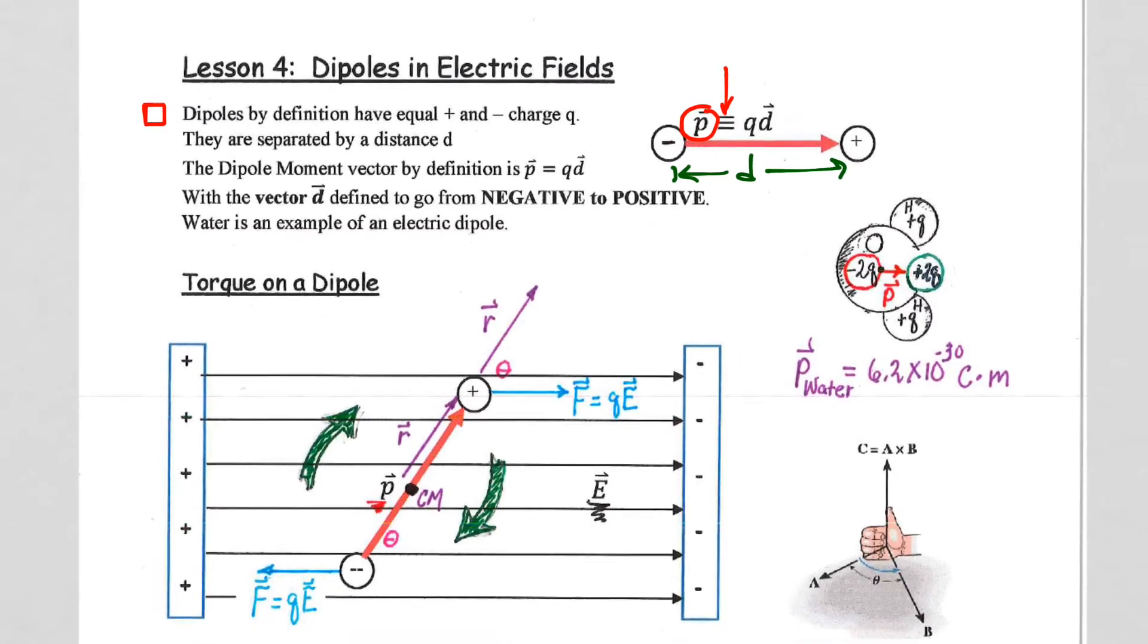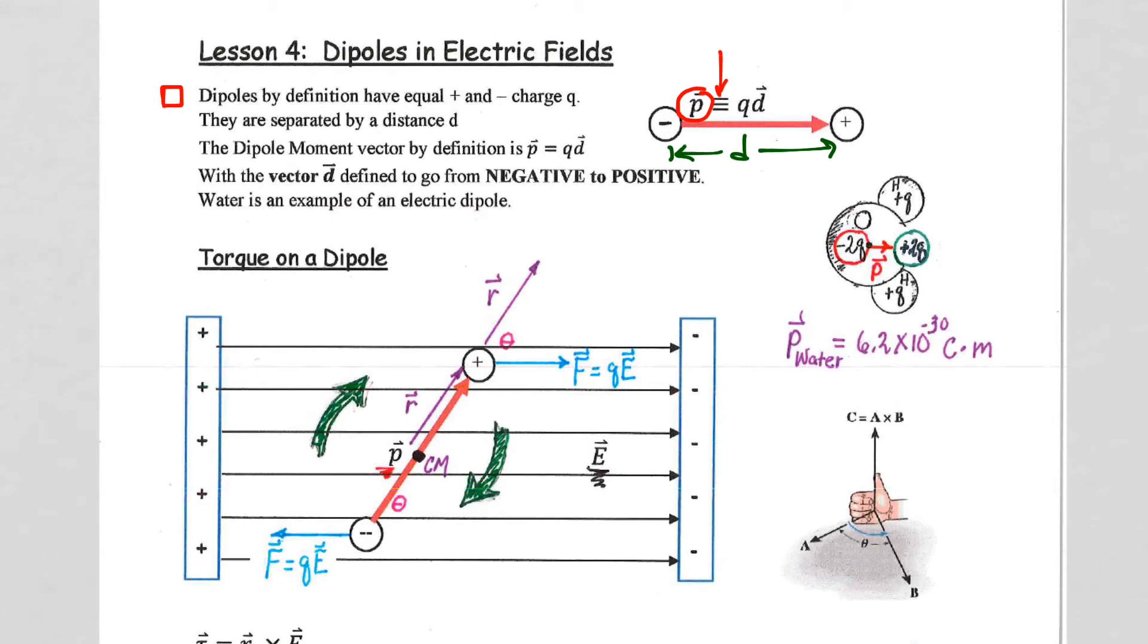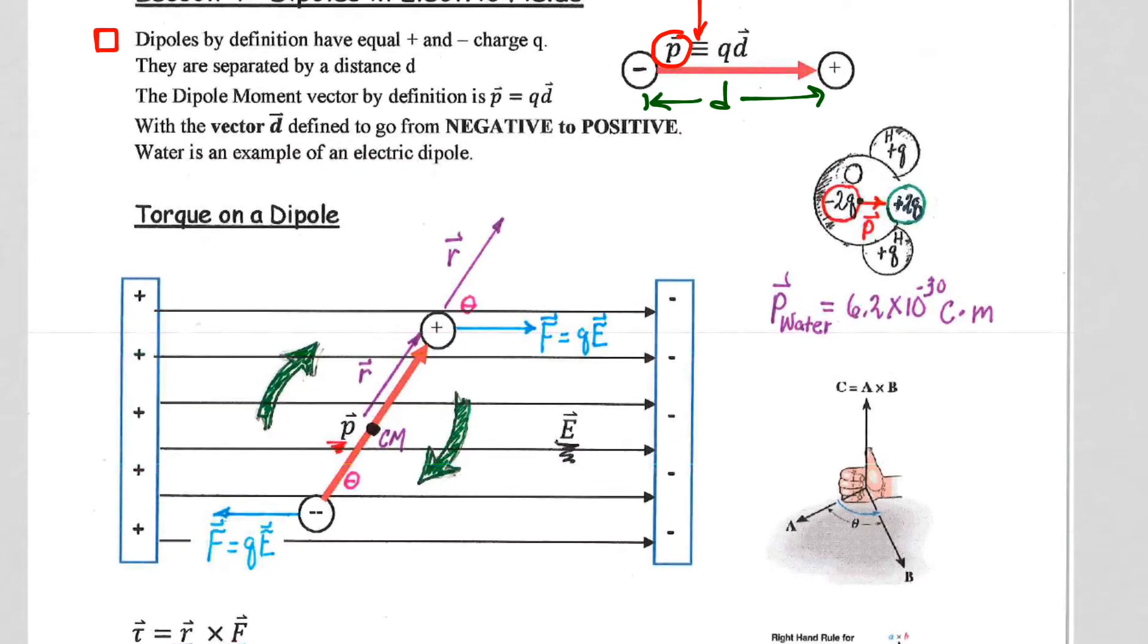From chemistry, water is an example of an electric dipole. A diatomic molecule has a center of charge distribution, similar to our center of mass concept. Those two positive charges have a center of charge distribution, plus 2q, which I put right here. The electron cloud will have a charge distribution, negative 2q, somewhere over here. Water is a polar molecule.